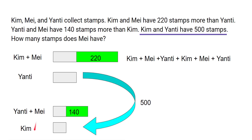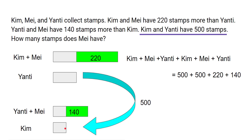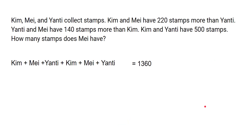Now, if we add Kim plus May plus Yanthi plus Yanthi plus May plus Kim from both diagrams, we get a total. The two Kim-and-Yanthi pairs each contribute 500, and we also have the 220 and 140 remainders. So the total is 500 plus 500 plus 220 plus 140, which equals 1360.